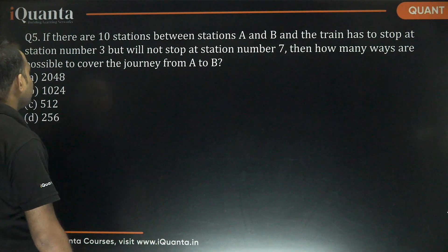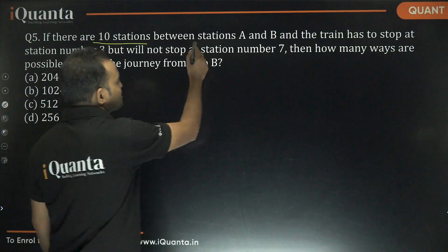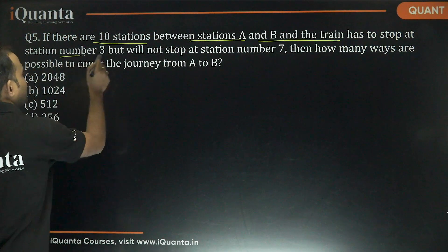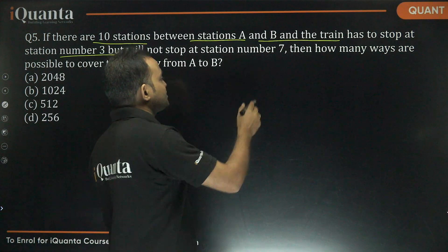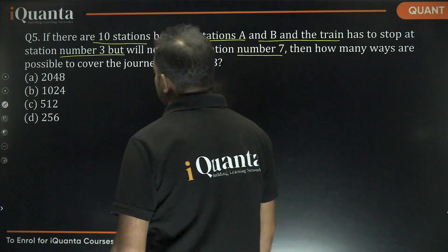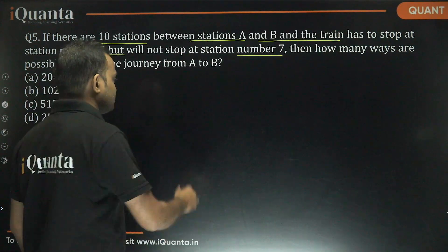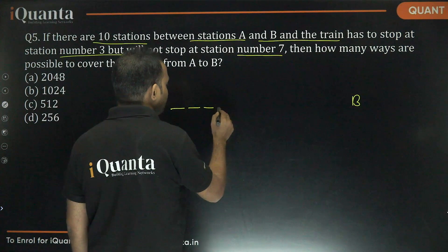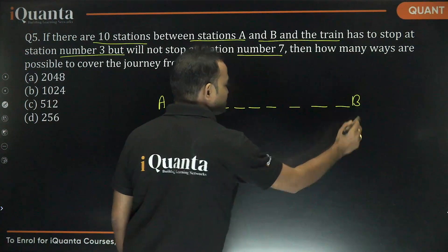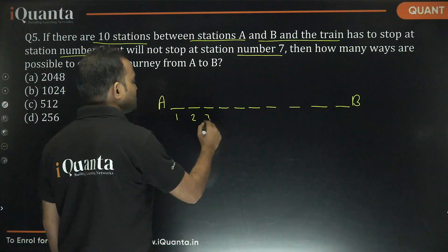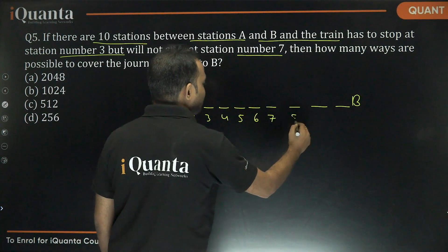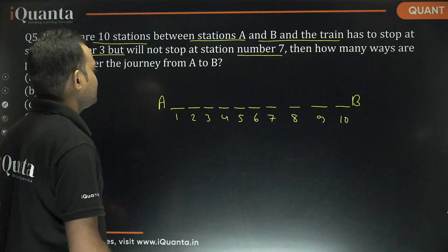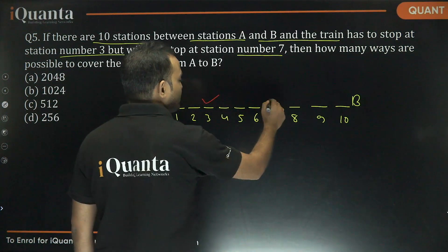Question 5: There are 10 stations between station A and station B. The train has to stop at station number 3 but will not stop at station number 7. How many ways are possible to cover the journey from A to B? Stations 1 through 10 lie between A and B. The train must stop at station 3 (one option) and must not stop at station 7 (one option).